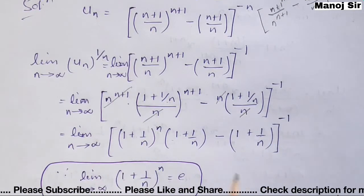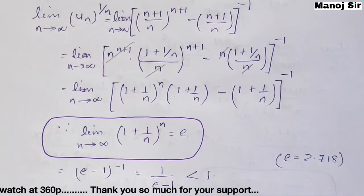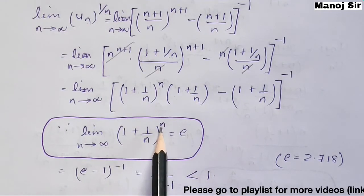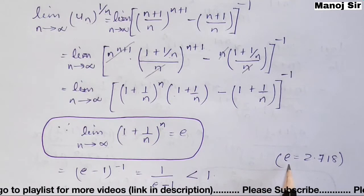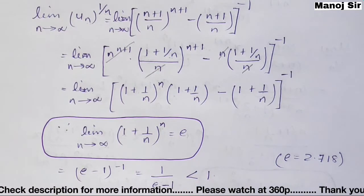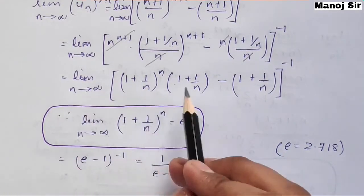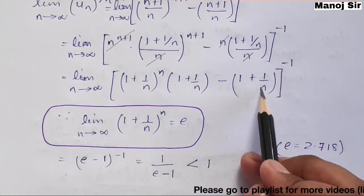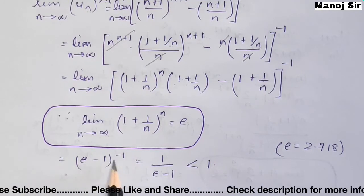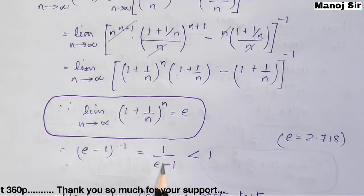We need to recall the standard limit from earlier in the series: limit n tends to infinity of (1 + 1/n)^n = e, where e = 2.718. As n tends to infinity, 1/n tends to 0. So the expression becomes e · (e − 1)^(−1), which equals e/(e − 1). Wait — applying the formula directly, we get the limit as (e − 1)^(−1) = 1/(e − 1).